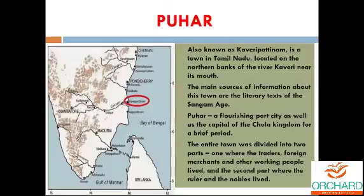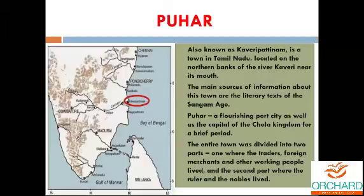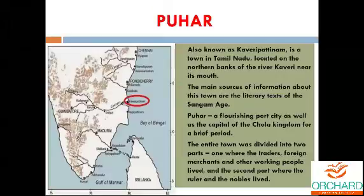King Karikala was the founder of Puhar, that is Poompuhar. Poompuhar is an ancient port city which was submerged. Some people believe that the ruins can be found under the ocean — it might have happened because of a tsunami or other natural disasters. This region was under the Chola kingdom, which is also known for being the only kingdom in ancient India with a naval fleet that fought wars over the sea.